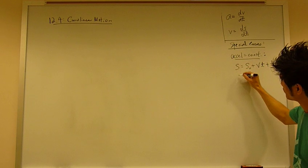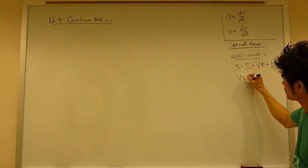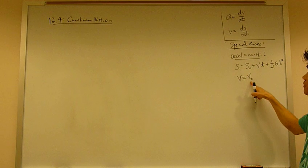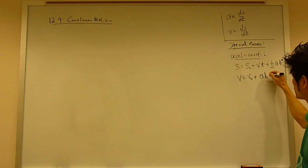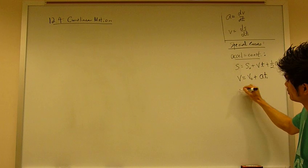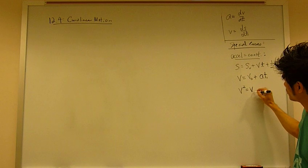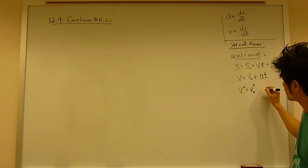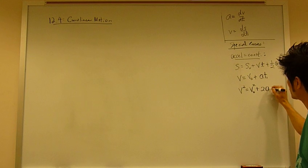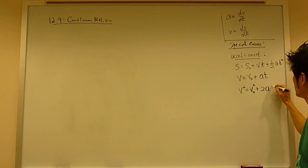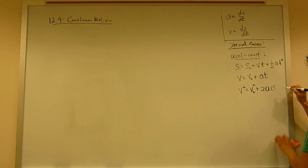The second equation that we can come up with is velocity, which equals initial velocity v-knot, plus acceleration times time. The third equation is velocity square equals v-knot square, plus two times acceleration times change in displacement.